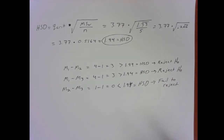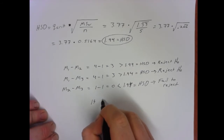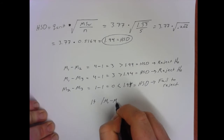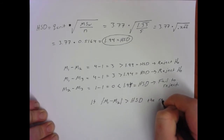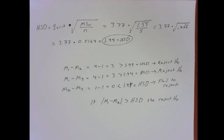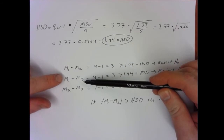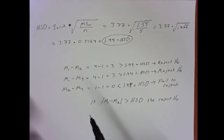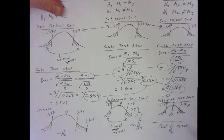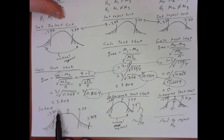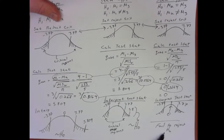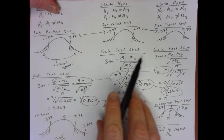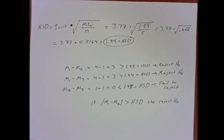The decision rule is: if the absolute value of the mean difference is greater than HSD, reject the null hypothesis. We see a difference between samples 1 and 2, and between samples 1 and 3, but samples 2 and 3 are not significantly different from each other. This matches the pattern of results we got when we did all three comparisons the long way — reject, reject, and fail to reject.